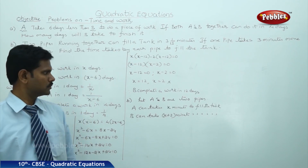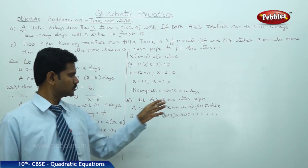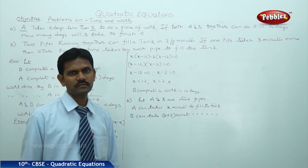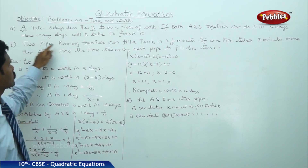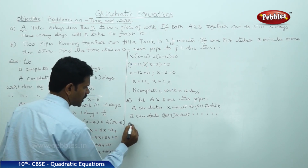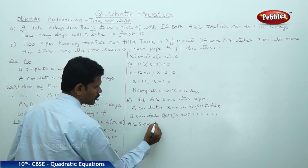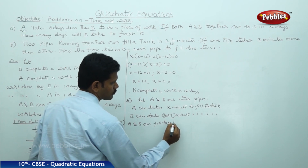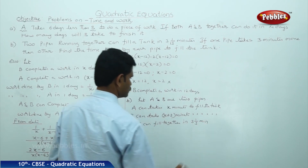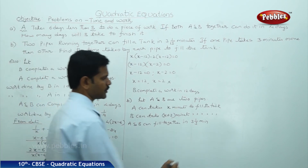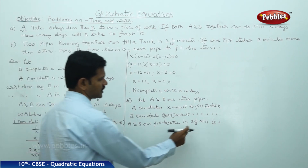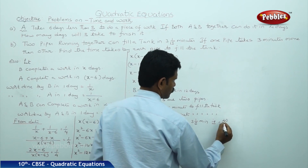According to the question, two pipes running together can fill the tank in 3 and 1 by 13 minutes. That is, A and B together can fill in 3 and 1 by 13 minutes. Converting: 3 and 1 by 13 equals 39 plus 1 over 13, which is 40 by 13 minutes.